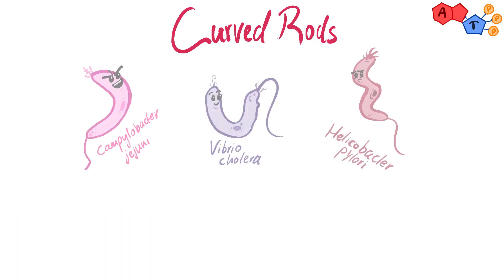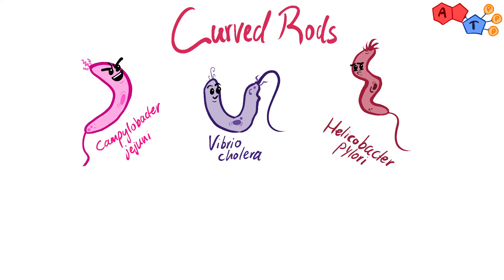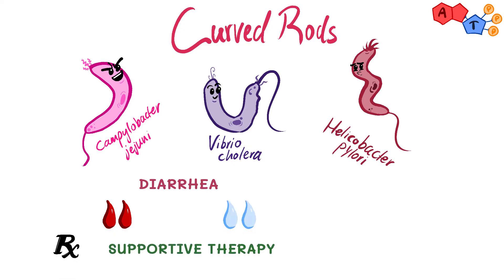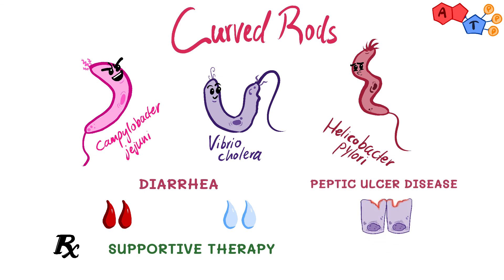To summarize, we talked about three gram-negative curved rods. The first two can cause diarrhea — Campylobacter usually causes bloody diarrhea, while Vibrio cholerae usually causes watery diarrhea — and the treatment of both is usually supportive. The last one, Helicobacter pylori, commonly causes peptic ulcer disease, and for that we use triple (TREPL) therapy.